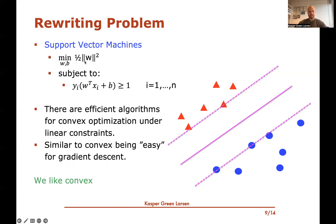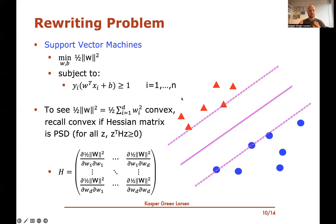This new objective function is actually a convex function of the variables w. We can change the maximization of one over the norm of w into a minimization of half times the squared norm of w. This is the final version of the optimization problem: minimizing over w and b half times the squared norm of w, subject to these linear constraints. There are efficient algorithms for convex optimization under linear constraints, similar to how gradient descent works better for convex functions and ends up in a global minimum.